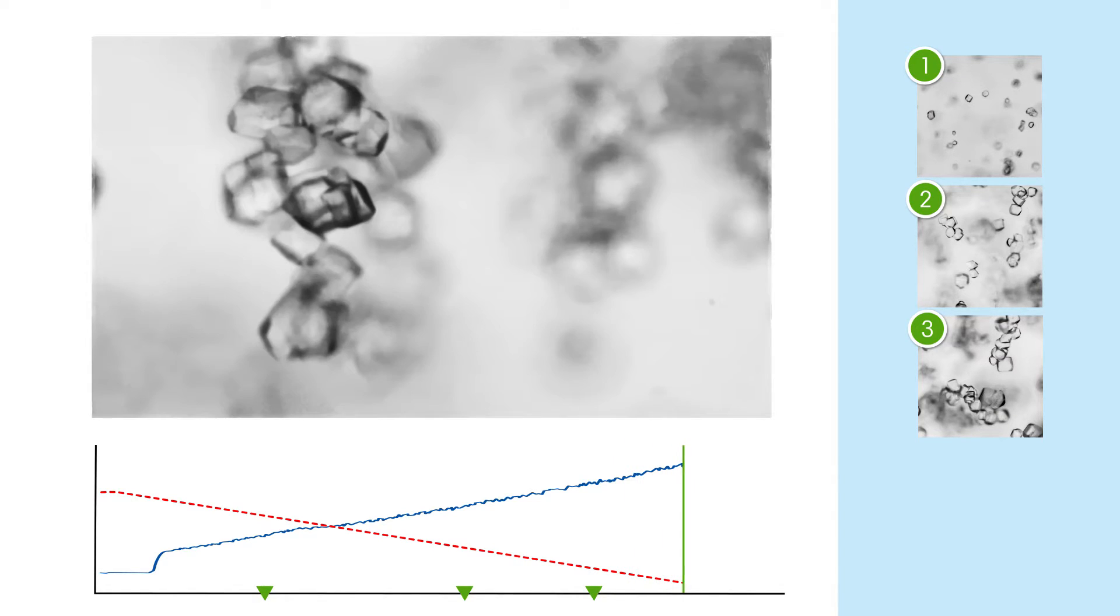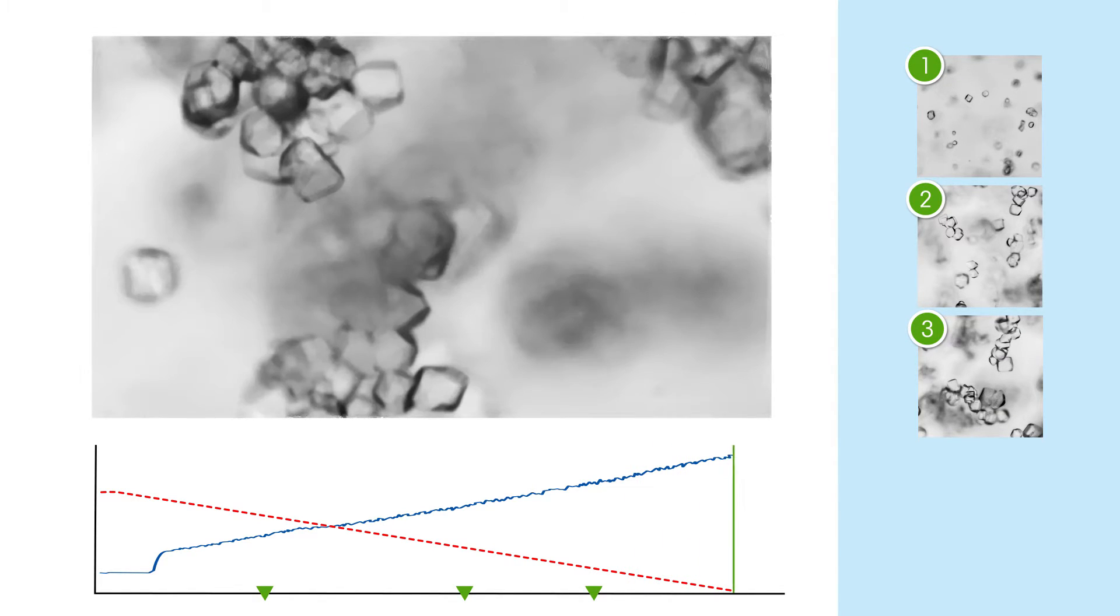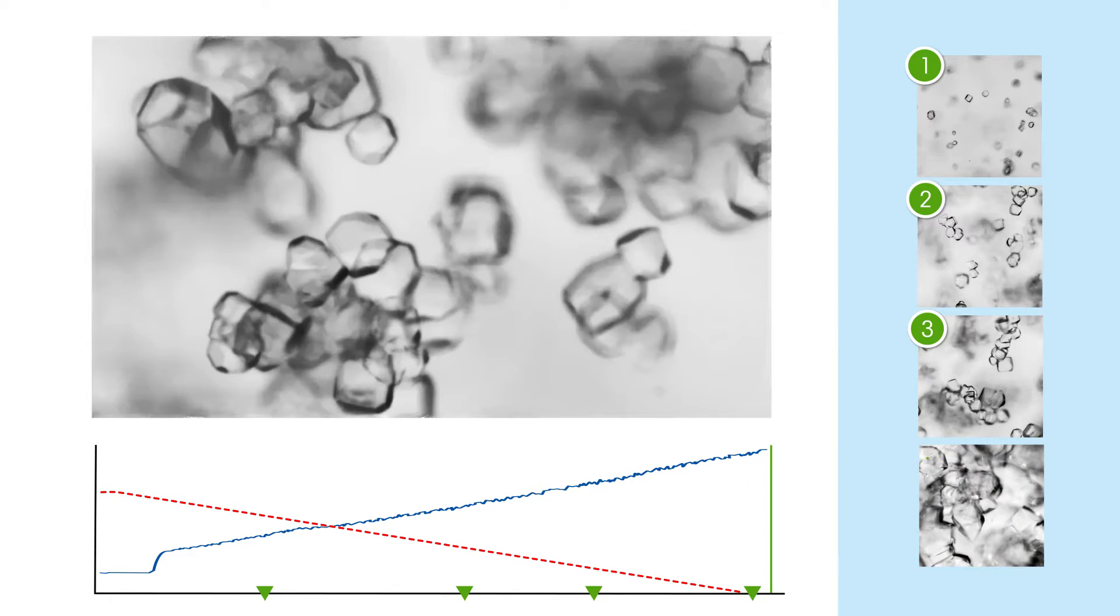Eventually, these agglomerates begin to grow themselves, and we see the primary crystals in each agglomerate increase in size.